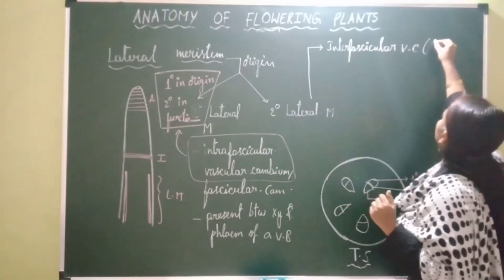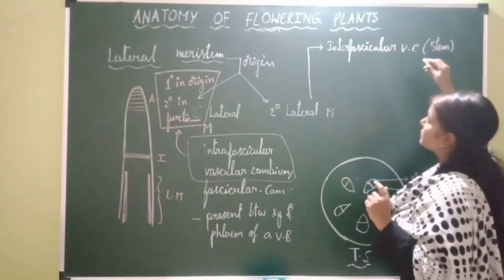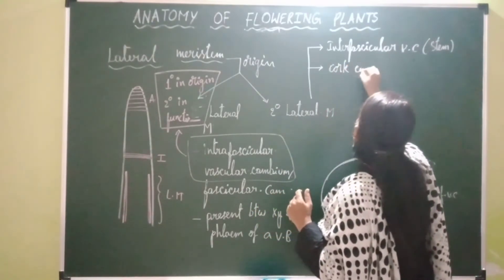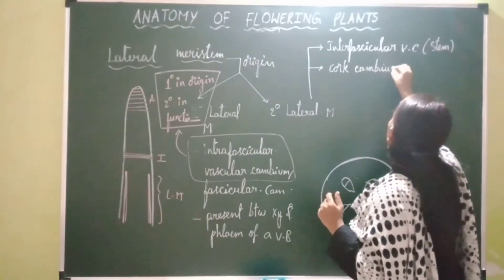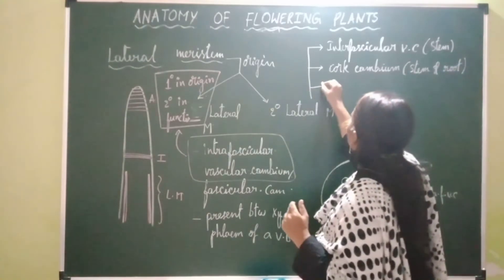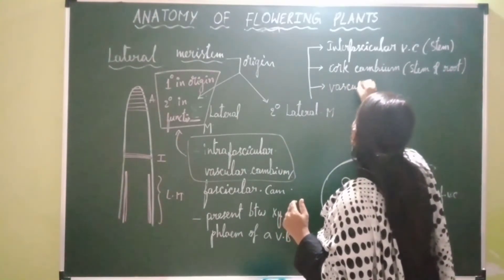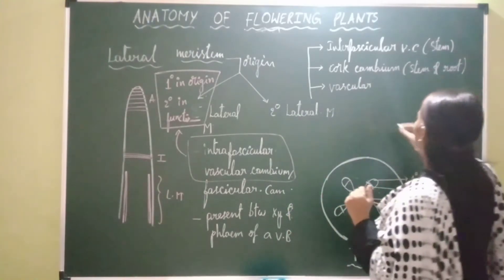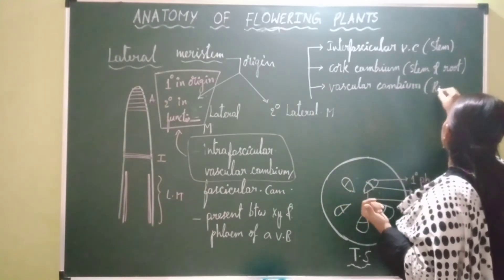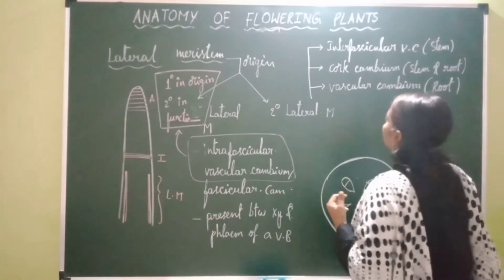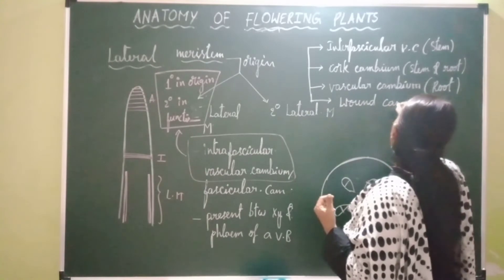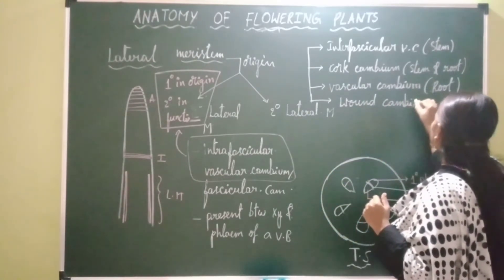Other examples of secondary lateral meristems include cork cambium, present in both stem and root, and vascular cambium which is formed in dicot roots and roots of gymnosperms, because only dicots and gymnosperms show secondary growth.